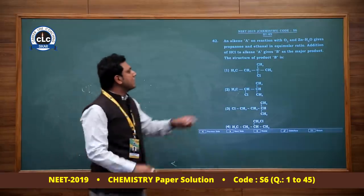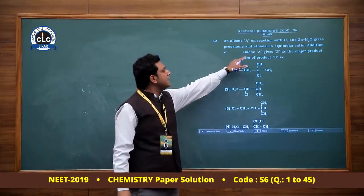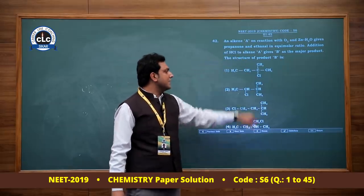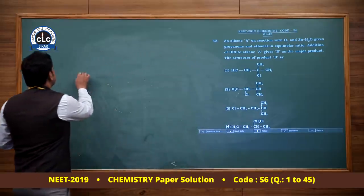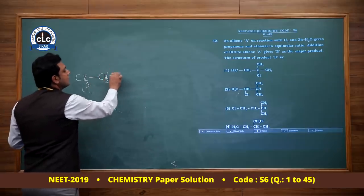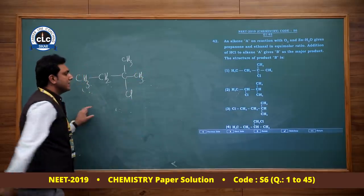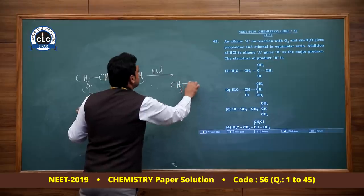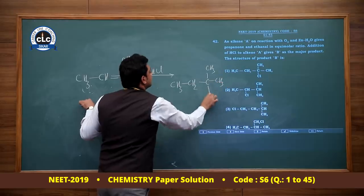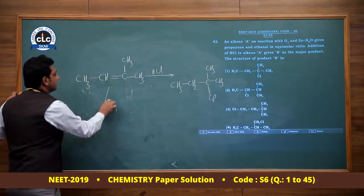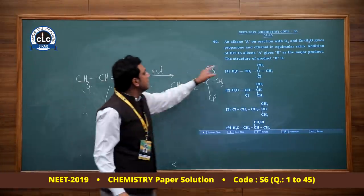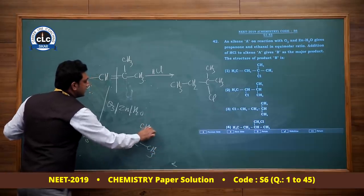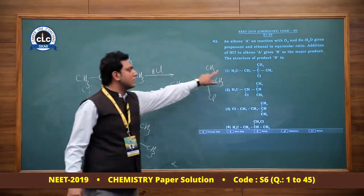Alkene A on ozonolysis (O3, Zn/H2O) gives propanone and ethanal in equimolar ratio. Addition of HCl to alkene A gives B as major product. Structure analysis: propanone (CH3COCH3) and ethanal (CH3CHO) suggest alkene A is CH3-C(CH3)=CH-CH3 (2-methylbut-2-ene). Adding HCl via Markovnikov gives major product with Cl on more substituted carbon: CH3-C(CH3)(Cl)-CH2-CH3. Answer is option 1.